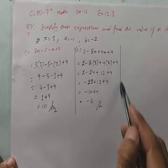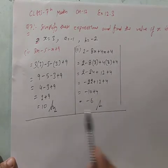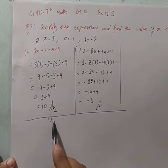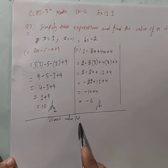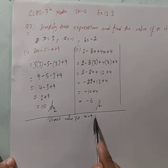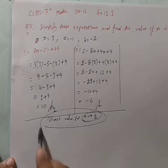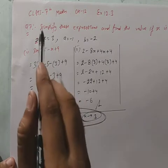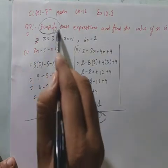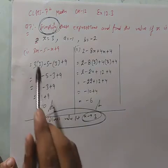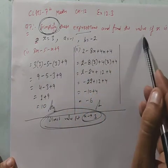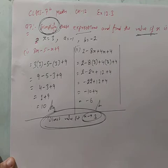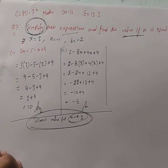देखो, इन दोनों parts में direct value put करके answer निकाला। हमने x की value 3 directly put की। लेकिन हमें पहले expression simplify करना है, और फिर value put करनी है। मैं इन्हीं questions को दूसरे method से करके दिखाता हूँ।